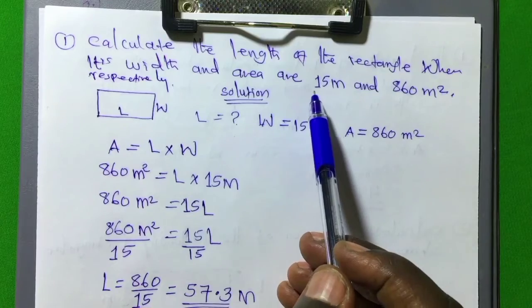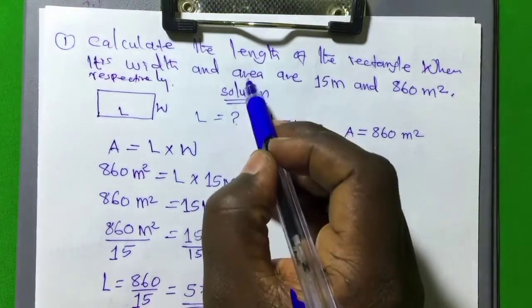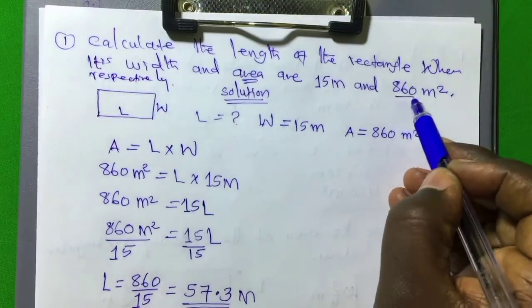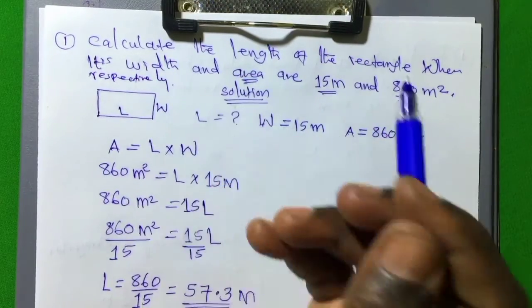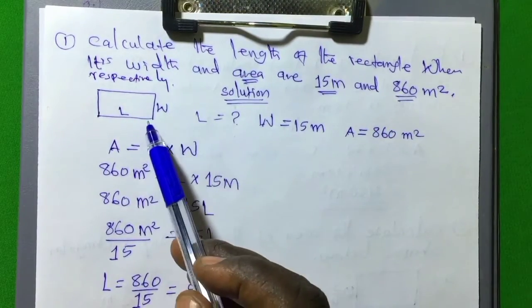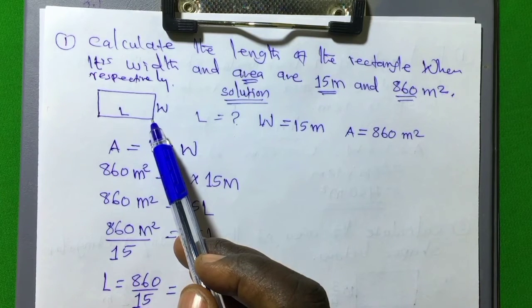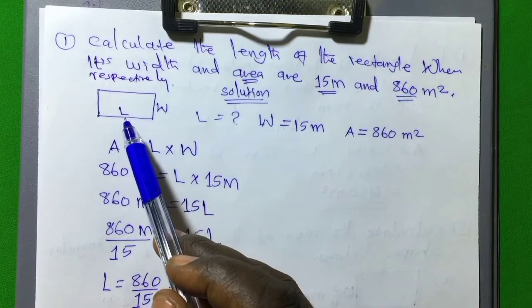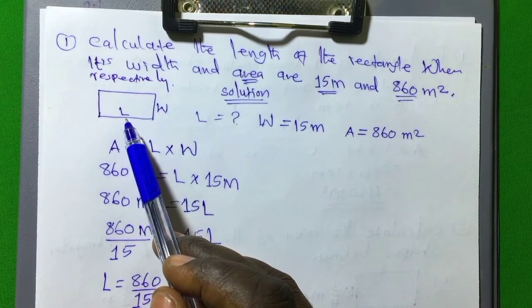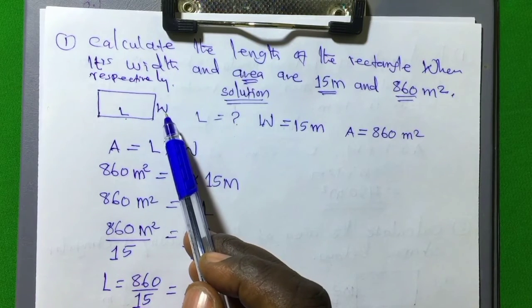The area here now we have the area is 860 meter square and this 15 is the value of width. Now let's draw the rectangular shape. This is the value of L and this is the value of W. L means the length and this is the width.